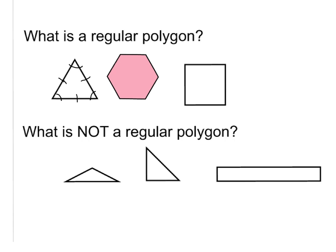Same with this hexagon right here. Can you see how all my angles are obtuse angles? They're greater than 90 degrees and they're all the same degrees, as well as all the lengths on each side are the same. So we would call this a regular hexagon. Let's take a look at the square — the basic square that you learned way back in kindergarten. It is a regular quadrilateral. It's a square. All of my angles are exactly the same — they're 90 degrees, also known as right angles — and all of my sides are the exact same length. So it is regular.